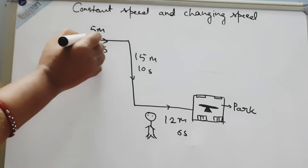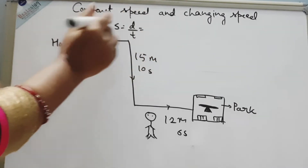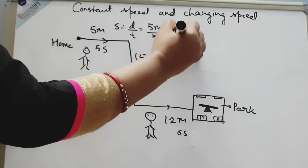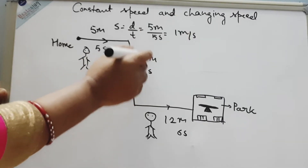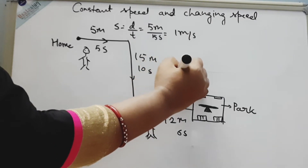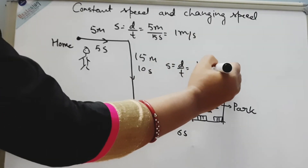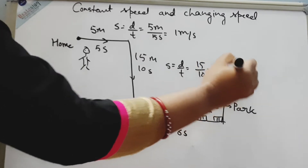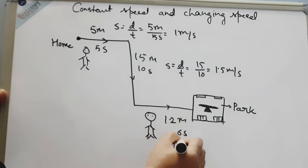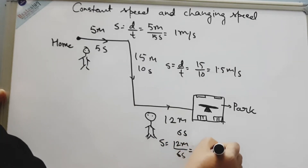In the first section, speed is equal to distance by time, that is 5 meters by 5 seconds, so it will be 1 meter per second. The second section: speed equals distance by time, that is 15 meters by 10 seconds, so speed will be equal to 1.5 meters per second. In the third section, speed equals 12 meters divided by 6 seconds, so it will be equal to 2 meters per second.